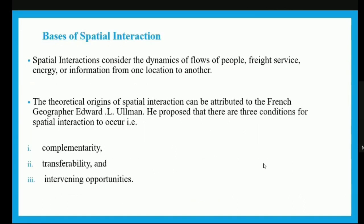Transport plays an important role in spatial interaction. Spatial interaction considers the dynamics of flow of people, services, energy or information from one location to another. The theoretical origins of spatial interaction can be attributed to the French geographer Edward L. Ullman, who proposed three conditions for spatial interaction to occur: complementarity, transferability and intervening opportunities.